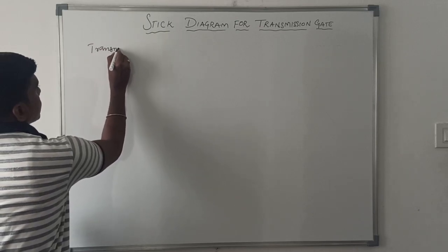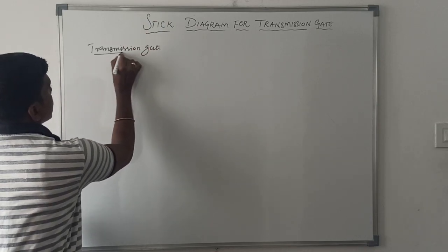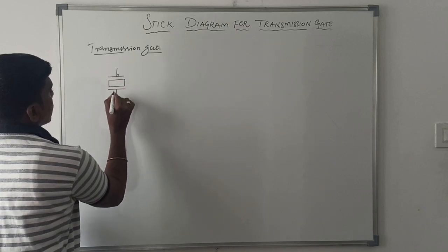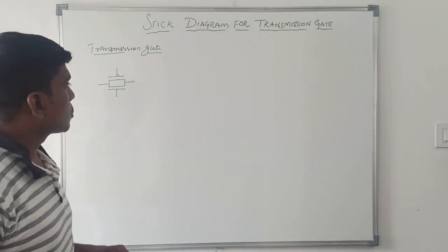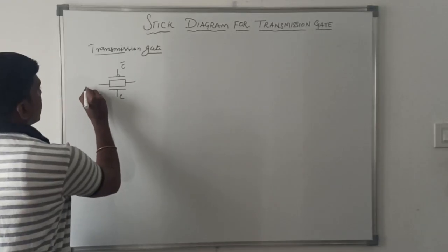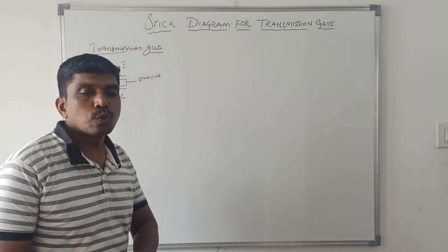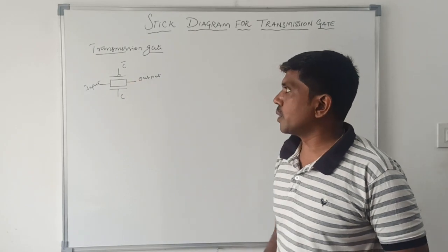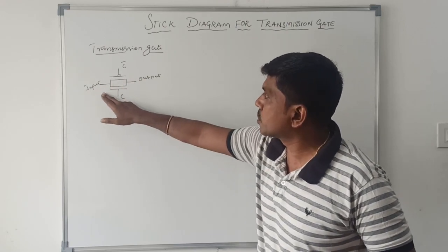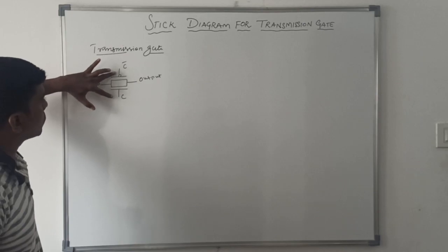First I draw the transmission gate. It's a simple structure. The transmission gate has two inputs: one is a primary input and another one is the controlling input — C bar and C. This one is called the input and this one is called the output. When the controlling input is activated, the input value is transferred from the input side to the output side. The control signals are C and C bar.